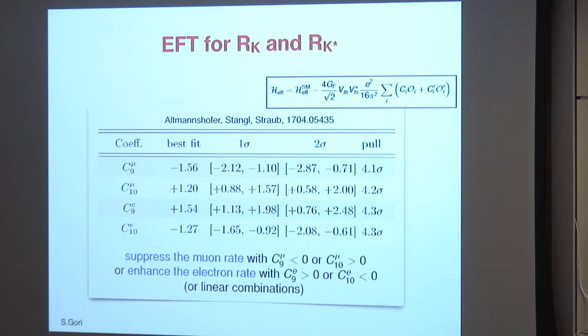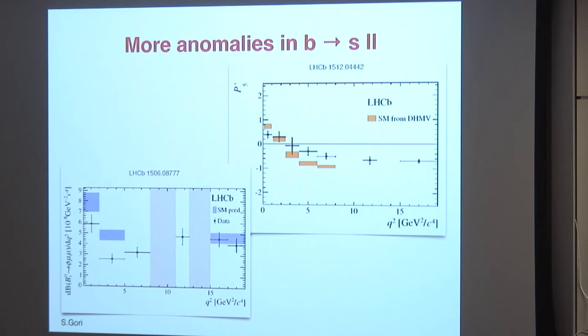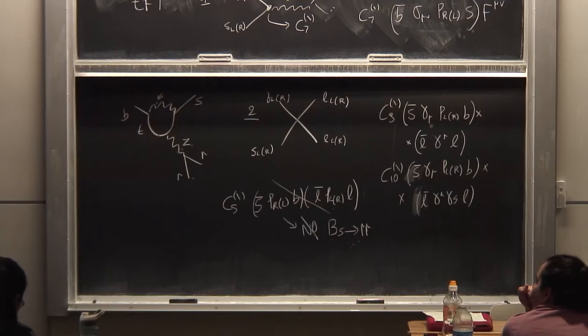Several groups are doing fits to all B→sℓℓ data — beyond just RK and RK*, there are many more measurements. What you see are tables where you can put new physics in the muon current or in the electron current. In principle, you don't know where the new physics is because we are measuring ratios. The best fit Wilson coefficients and the gain compared to the standard model show something like ~4σ once you combine everything. The exact significance depends on the group, but that's the ballpark.